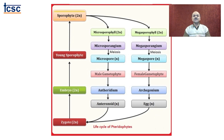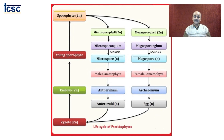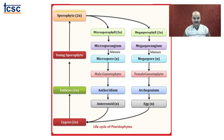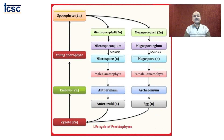Now let us look at the general life cycle of pteridophytes. Starting from the sporophyte — the plant body — which is divided into true roots, leaves and stem. It is the diploid plant body which gives rise to microsporophyll and megasporophyll. Microsporophyll produces microsporangium and megasporophyll produces megasporangium. The microsporangia and megasporangia undergo meiosis — a reduction division — where a diploid cell divides to give rise to four haploid cells: microspores and megaspores respectively.